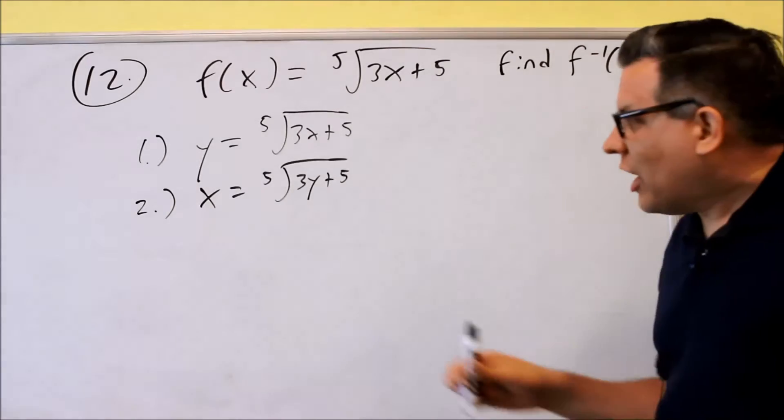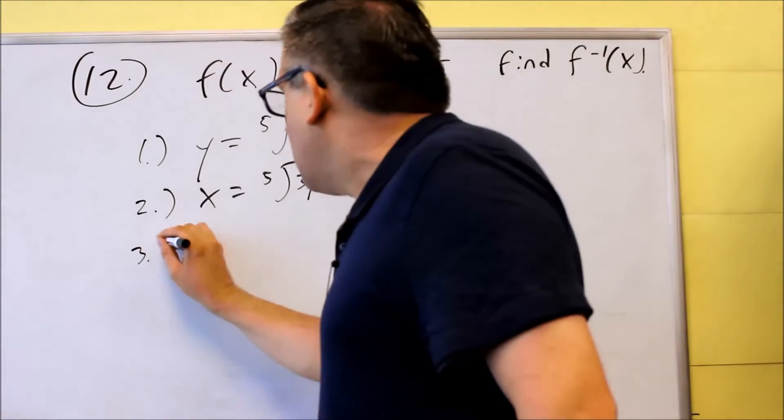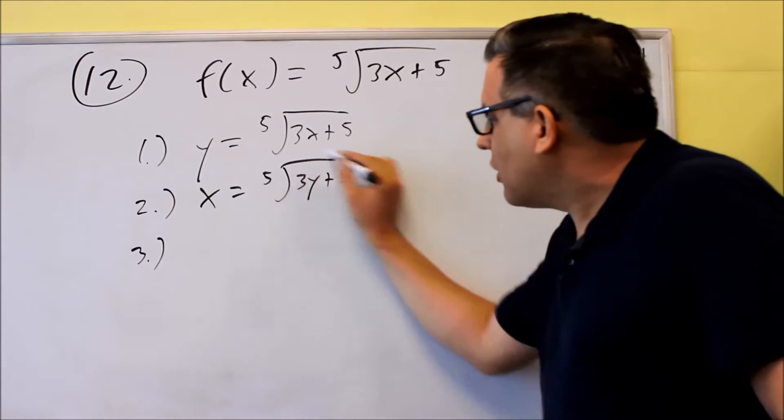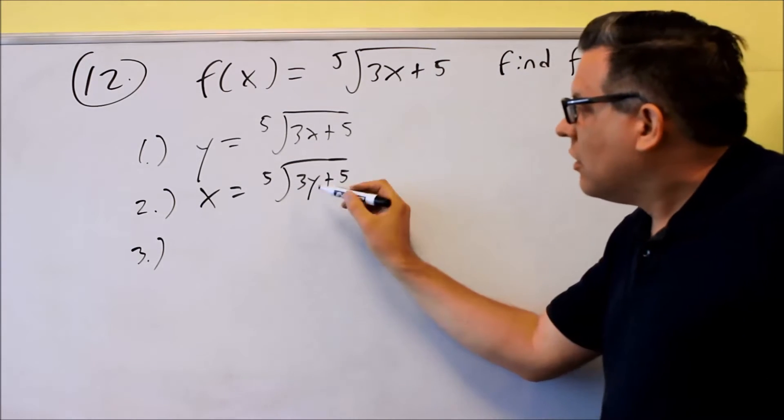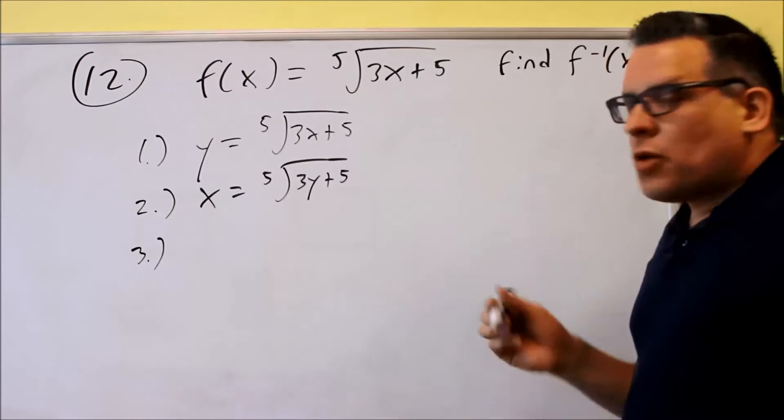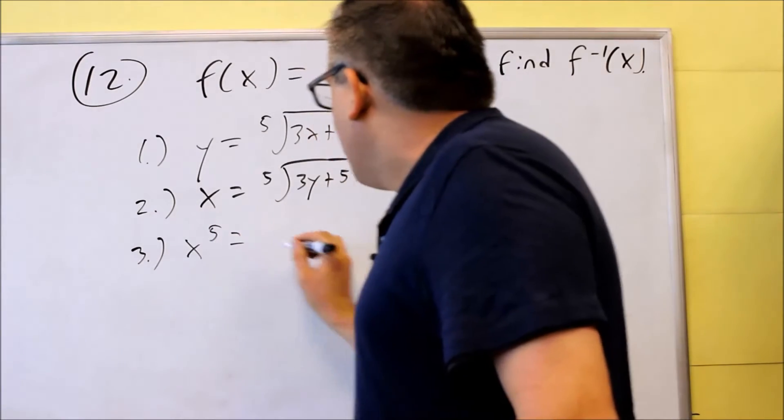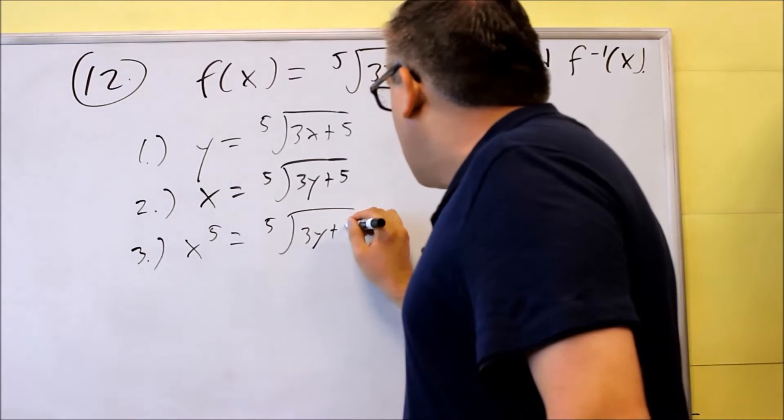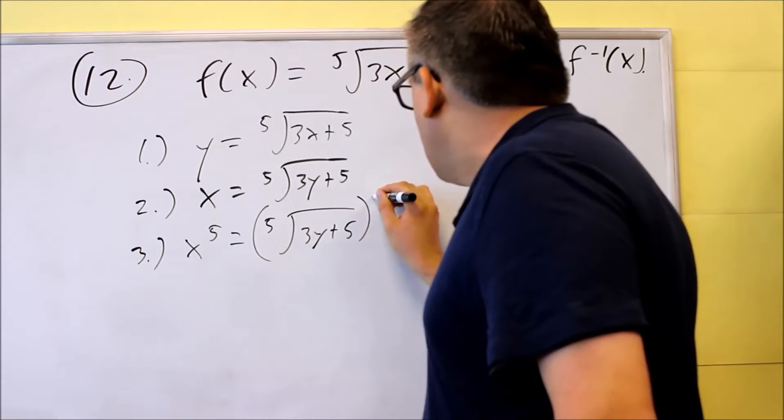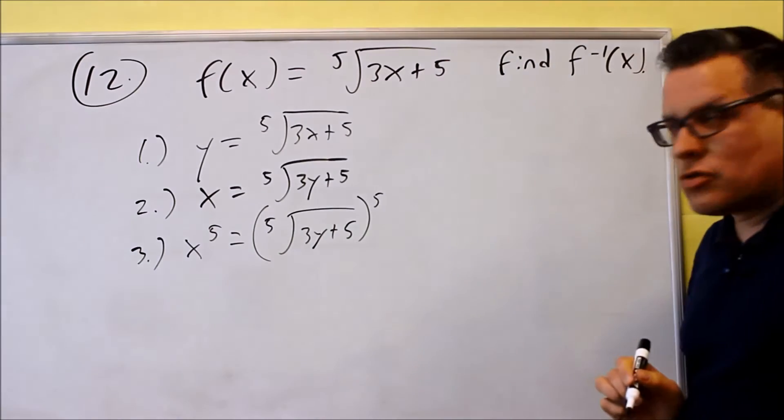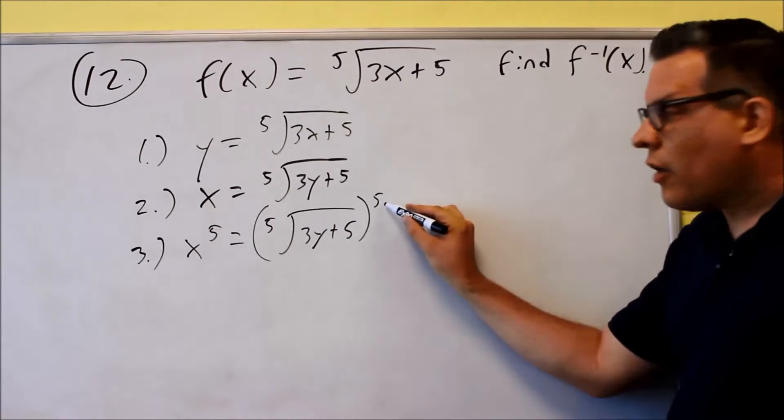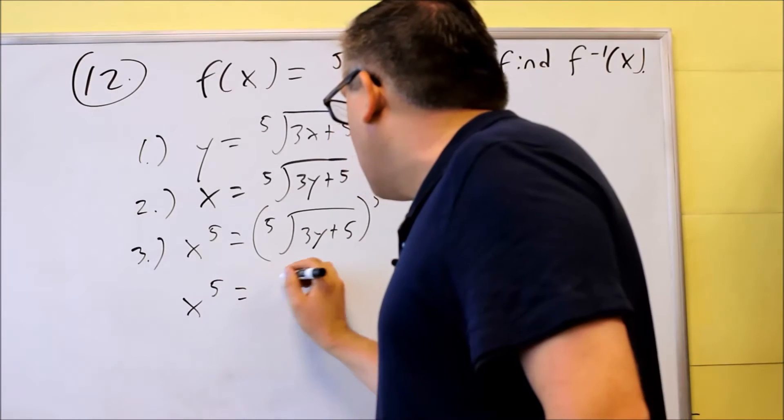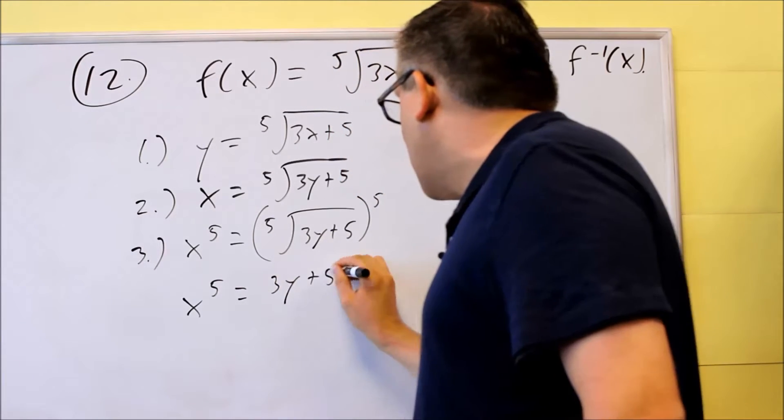Step three involves solve for y. In order to solve for y, we've got to get the y isolated. So we're going to raise both sides to the fifth power. I get x to the fifth here, and the fifth root of 3y plus 5, I'm going to raise that to the power of 5 also. The fifth power will cancel out the root, and I'll get x to the fifth equals 3y plus 5.